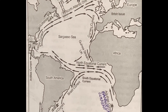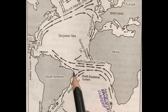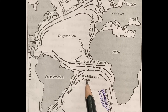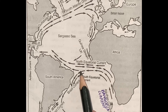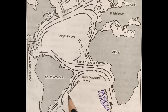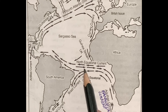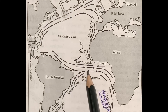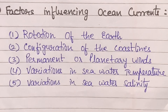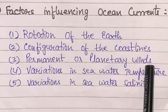The Brazilian coast bifurcates the movement of the south equatorial current — one branch diverts south as the Brazilian current, whereas the other diverts north to join the north equatorial current. The third factor is permanent or planetary winds.